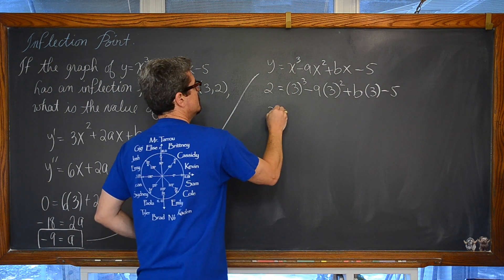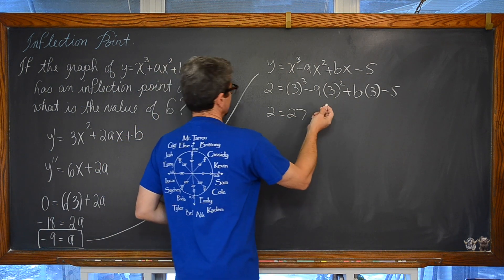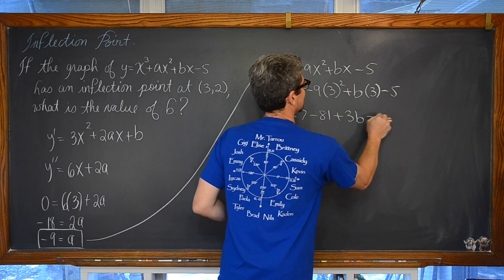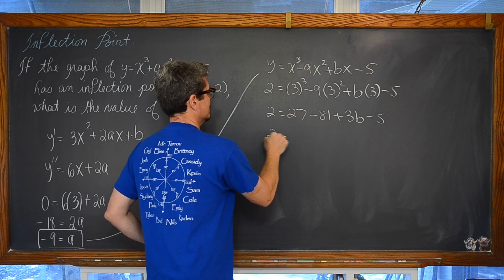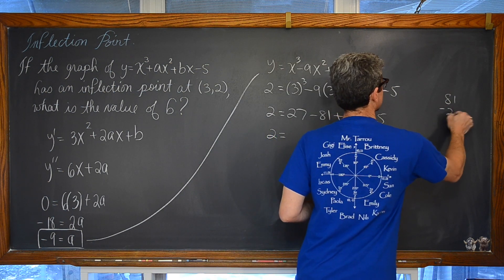We are looking at 2 is equal to 27. 3 squared is 9 and 9 times 9 is 81, so minus 81 plus 3b minus 5. We are looking at 2, what do we have here? Here we have 81 minus 27.